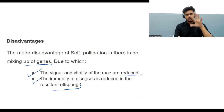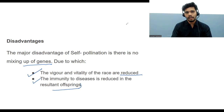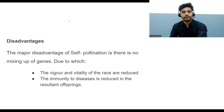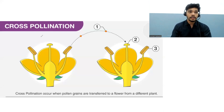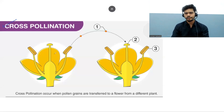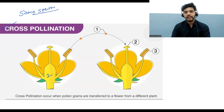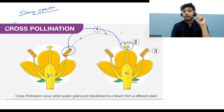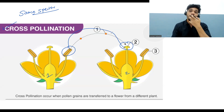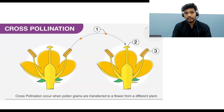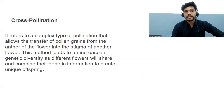Now cross-pollination — pollination must occur within the same species. If pollen grains transfer to the stigma of a different flower of the same species, it is cross-pollination. If it happens within the same flower, it is self-pollination. Don't get confused between the two.